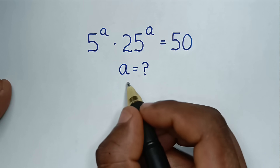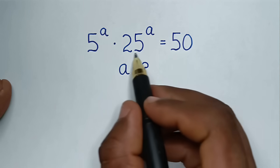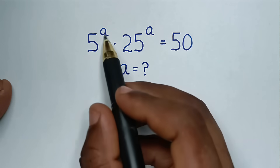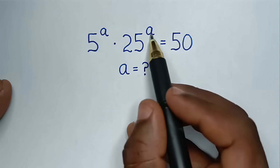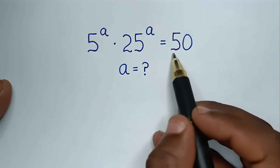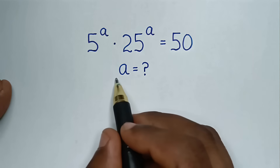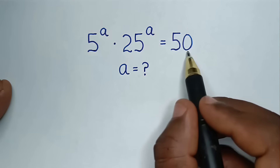Hello, you are welcome to solve this math problem, which is 5 power a times 25 power a is equal to 50. We need to find the value of a from this equation.